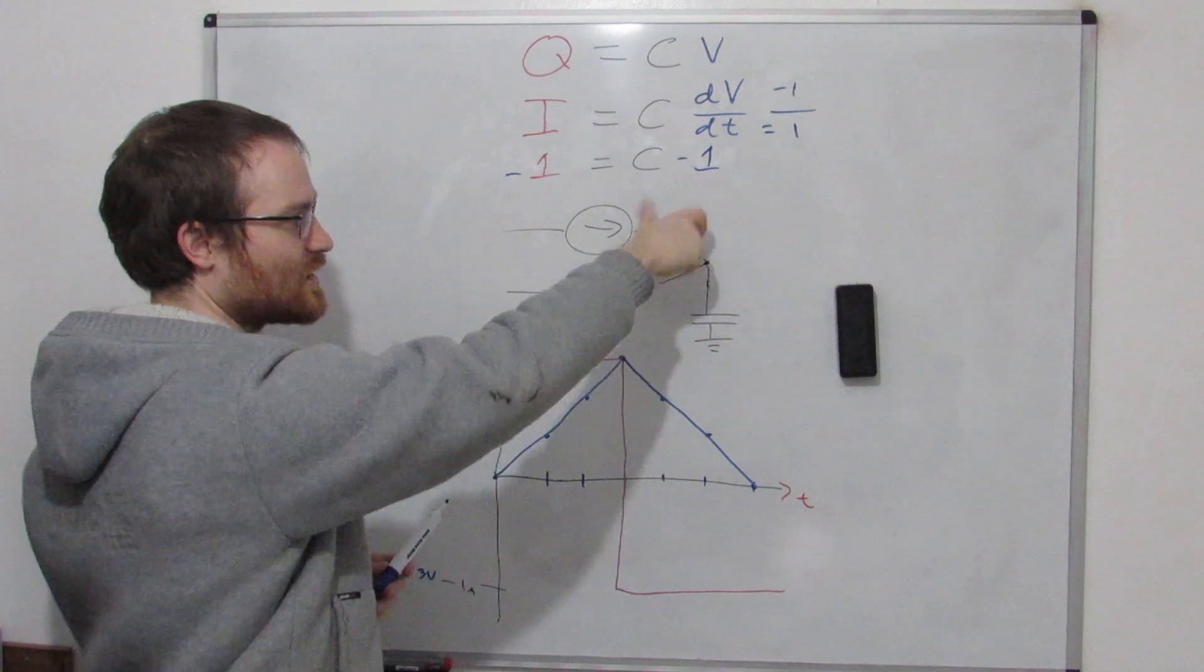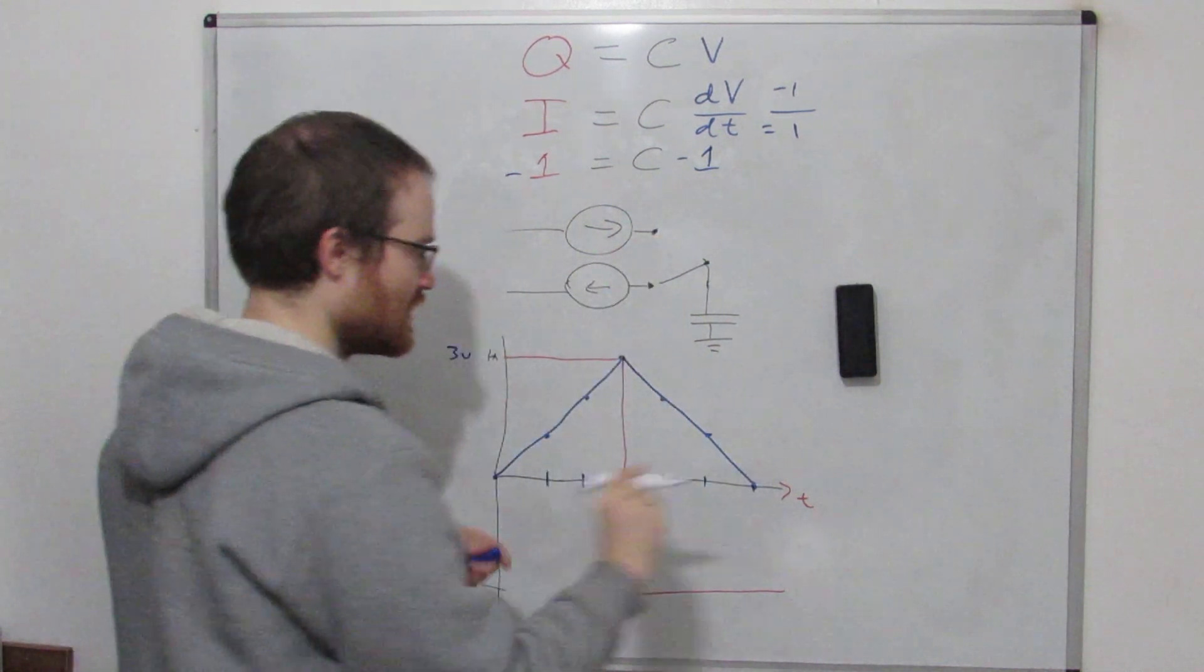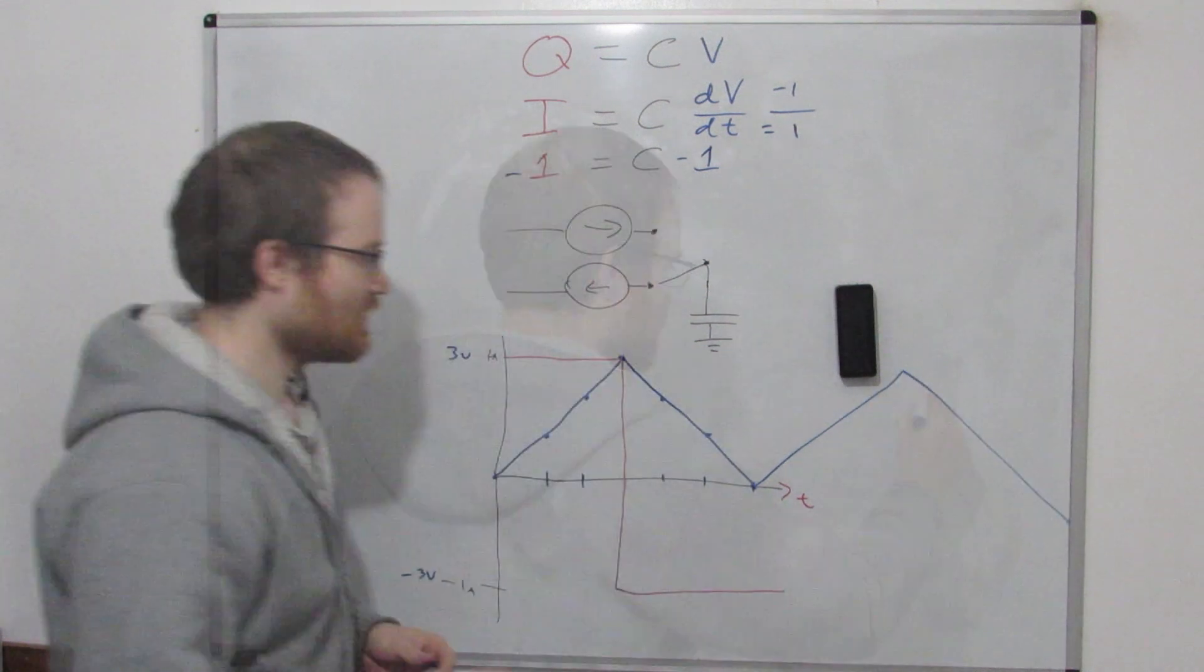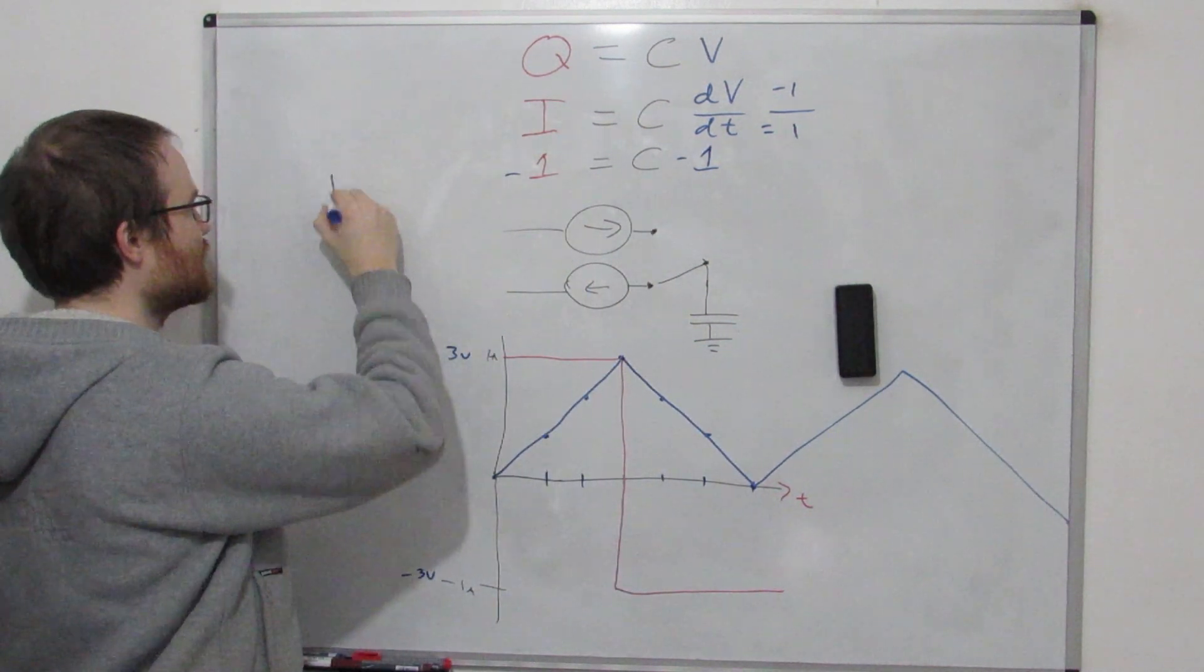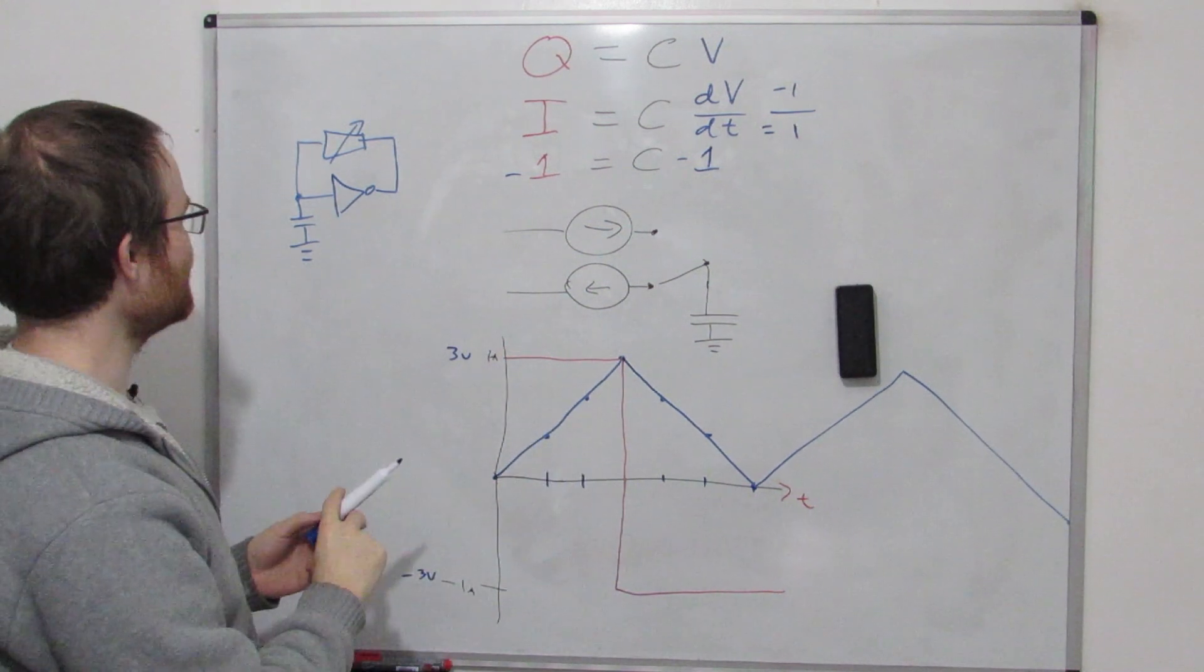So we've got a little ramp. If we carry on switching this up and down and up and down and up and down at this period, then we've got ourselves a nice triangle wave. If you think back to our little oscillator circuit, this is exactly what we've been doing. The oscillator has been going up and down, applying current this way and then draining the current off this way, and we've been generating this triangle wave.